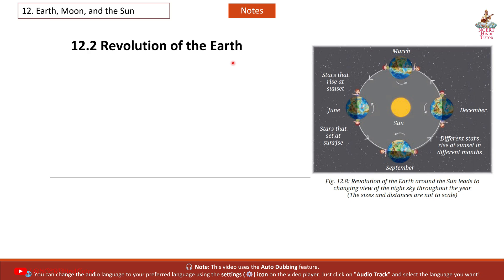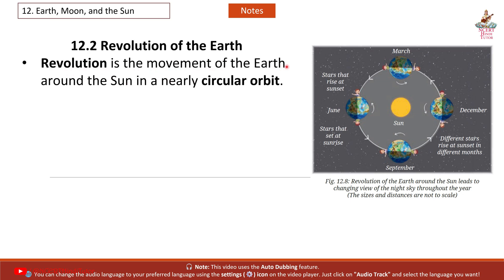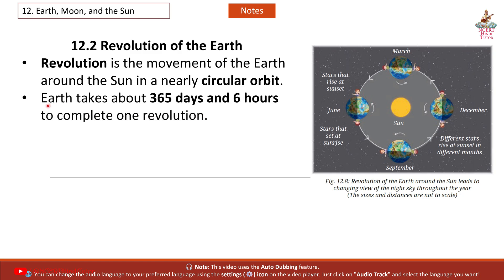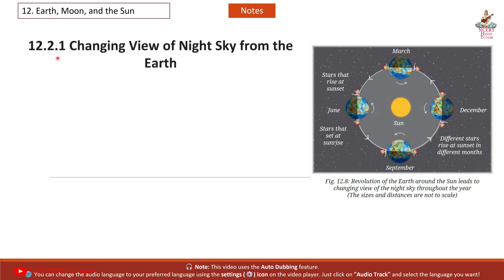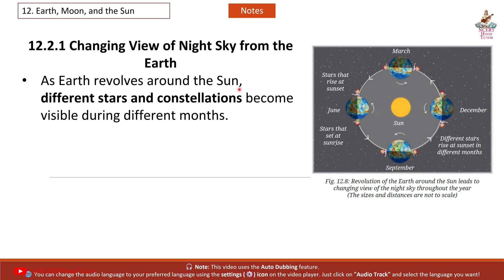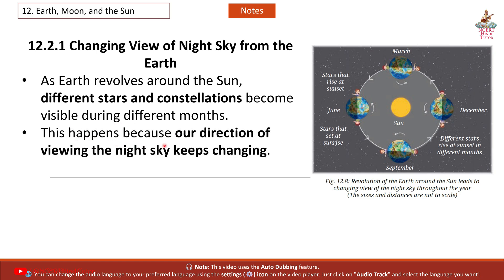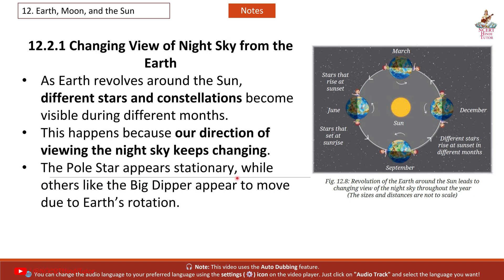12.2 Revolution of the Earth. Revolution is the movement of the earth around the sun in a nearly circular orbit. Earth takes about 365 days and 6 hours to complete one revolution. Earth continues to rotate on its tilted axis while it revolves, leading to various effects like seasons and changes in the night sky. As Earth revolves around the sun, different stars and constellations become visible during different months, because our direction of viewing the night sky keeps changing. The pole star appears stationary, while others like the Big Dipper appear to move due to Earth's rotation.